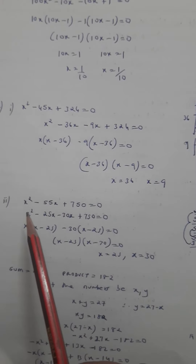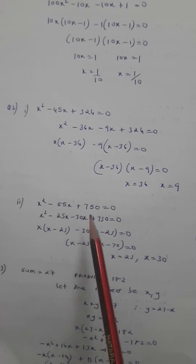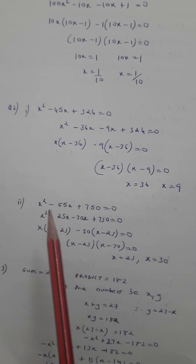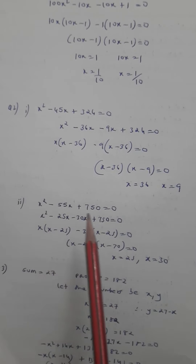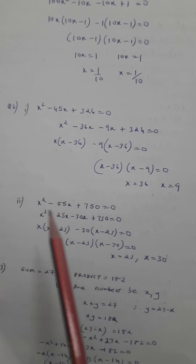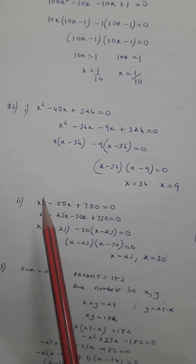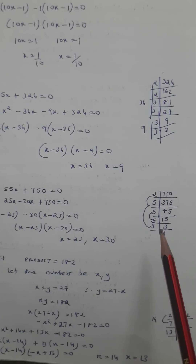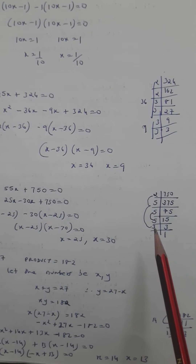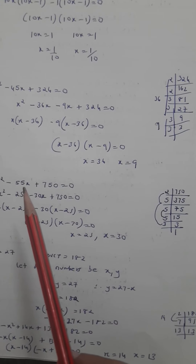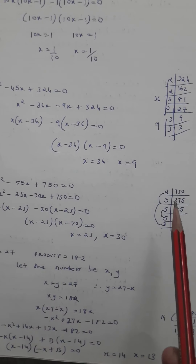Combining, we get (x minus 9)(x minus 36), so the values of x are 36 and 9. Similarly, for the second solved example, you need to read the question from the solved example. They have left the equation here for us to solve. The product here is 750, so I need to find the factors of 750.